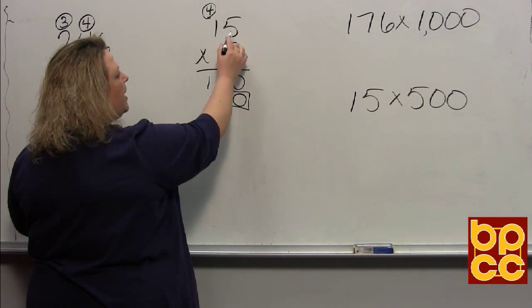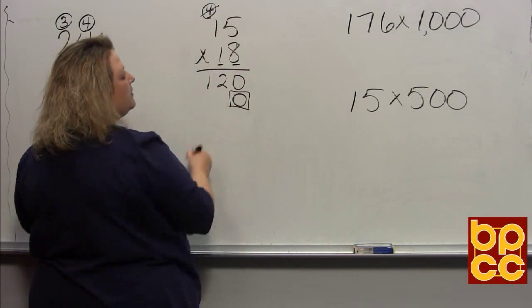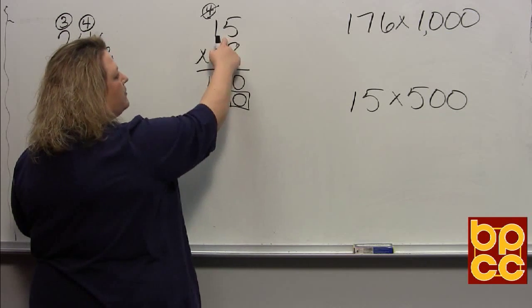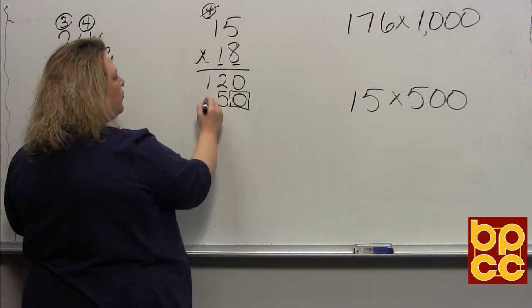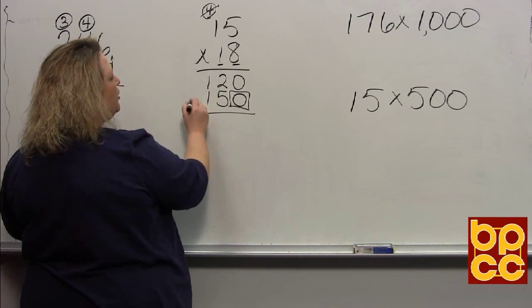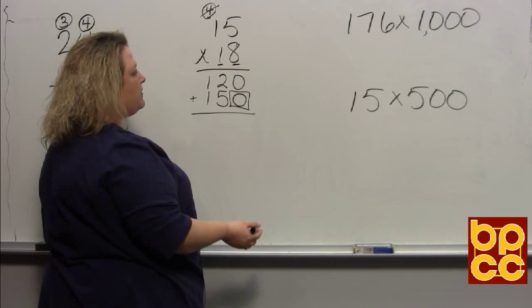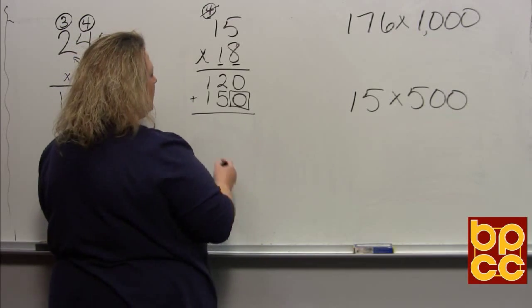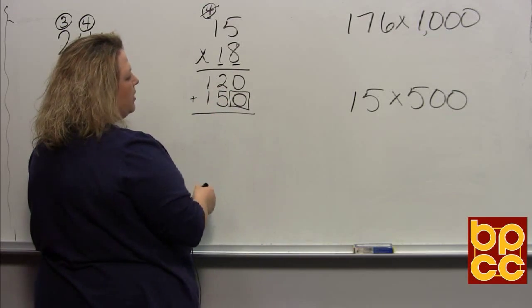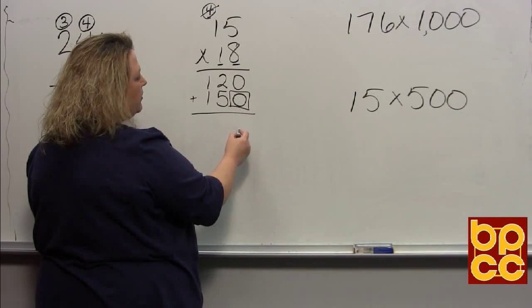We're going to take this one and now multiply it by all of the digits above it. 1 times 5 is 5, 1 times 1 is 1. You will notice that I crossed out the 4 because I used it with the 8, so I don't need to use it again.